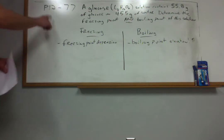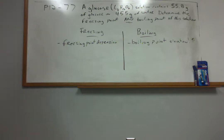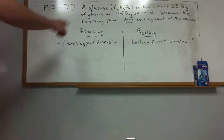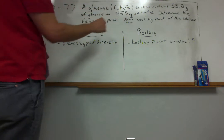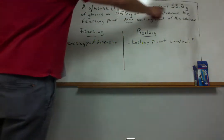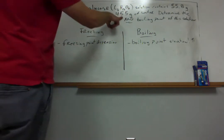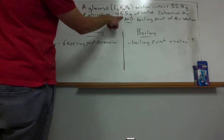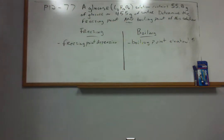Alright, hard at work here on problem 12-77 from the end of chapter questions. This one deals with freezing and boiling points of solutions vis-a-vis these colligative properties. The problem reads: a solution is made from glucose, formula C6H12O6 (sugar), that solution contains 55.8 grams of the glucose dissolved in 455 grams of water. Determine the freezing point and the boiling point of the resulting solution.